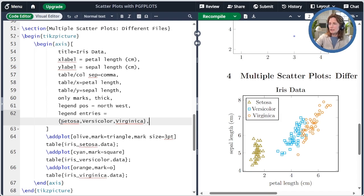Again, we put these in the order of our addplot. So first Setosa, then Versicolor, then Virginica.